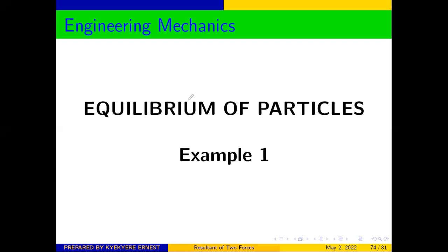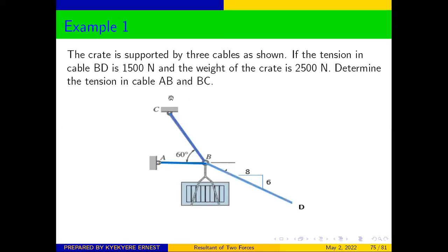Example one. The crate is supported by three cables as shown. If the tension in cable BD is 1500 Newtons and the weight of the crate is 2500 Newtons, determine the tension in cables AB and BC.